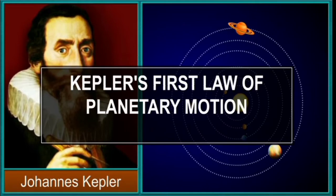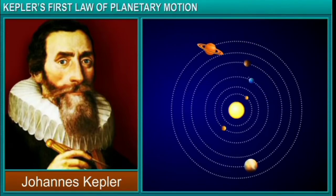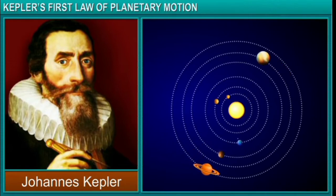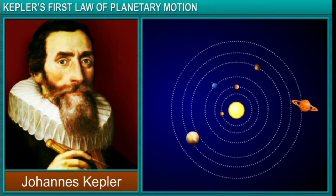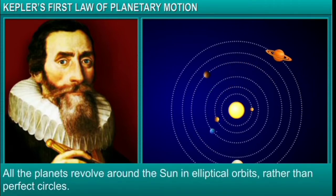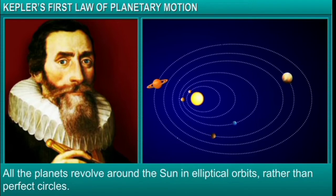In this module, you will learn about Kepler's first law of planetary motion. In the early 16th century, Johannes Kepler, a German mathematician, astronomer, and astrologer, explained that planets revolve around the Sun in elliptical orbits, resulting in the change in distance from the Sun at various times of the year.